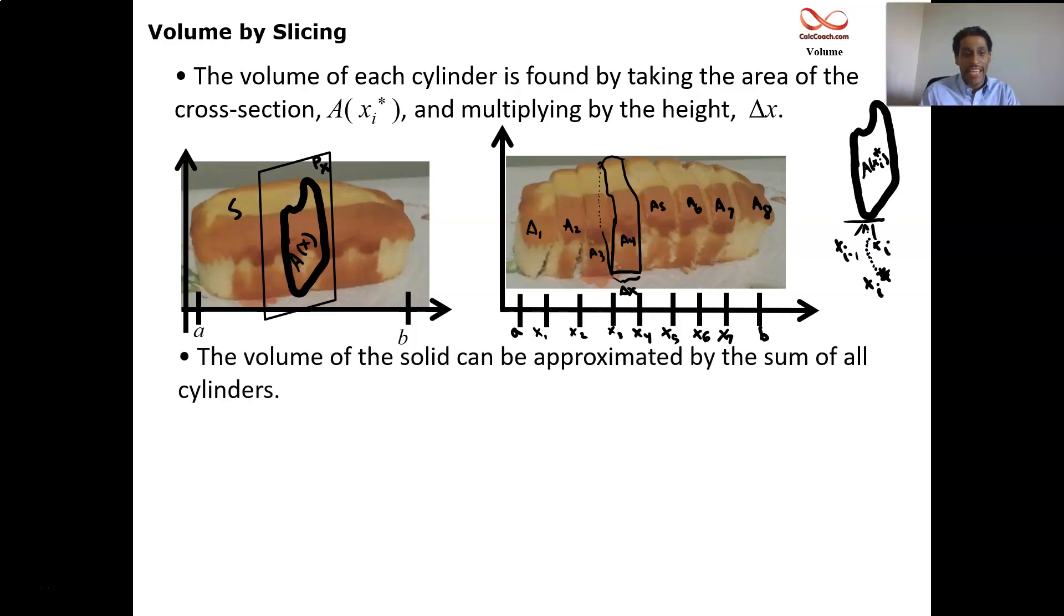So we can have this formula which is representative of adding up eight different items as a summation. Volume equals the summation i equals 1 to N. N is generically any number you want, a finite number at first for approximation sake. And then the two guys are multiplying the area of the base times the height.